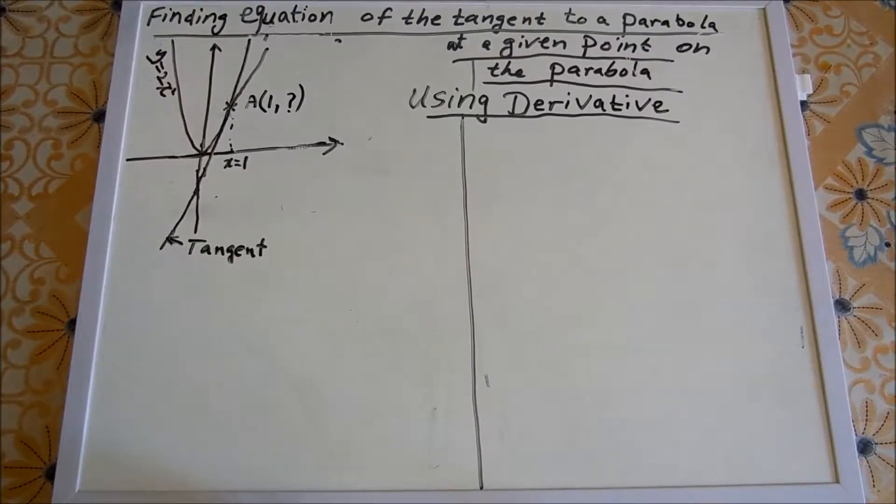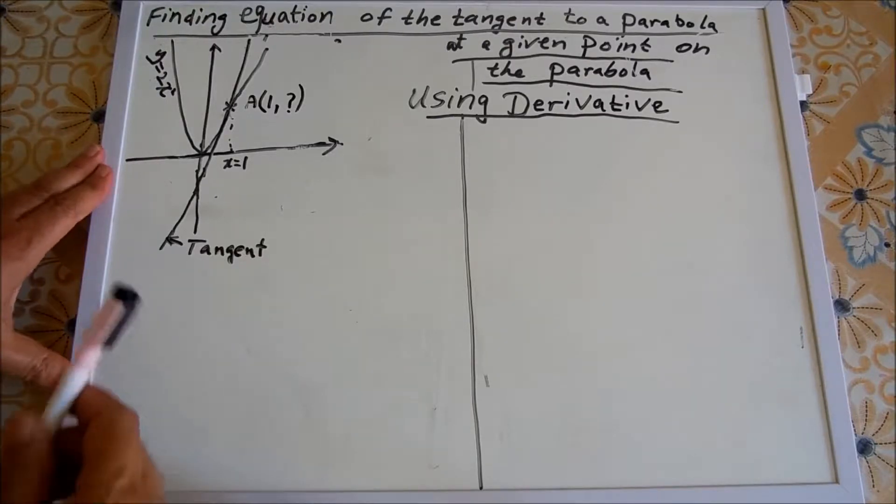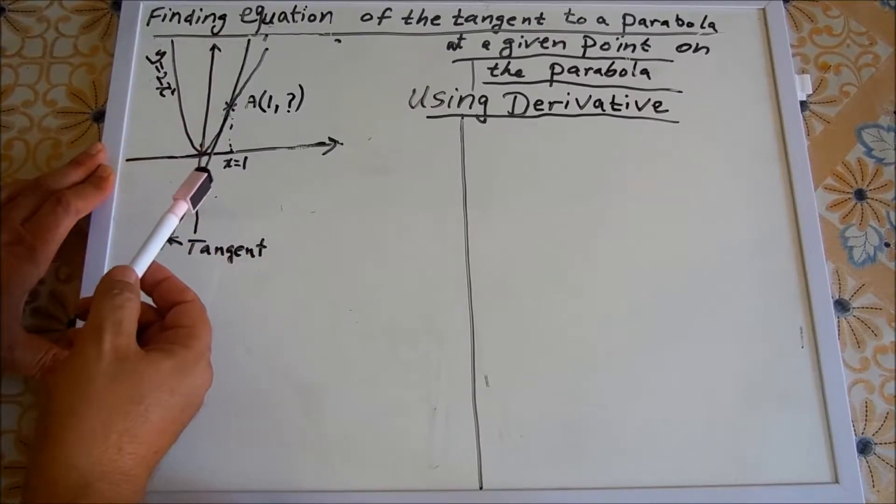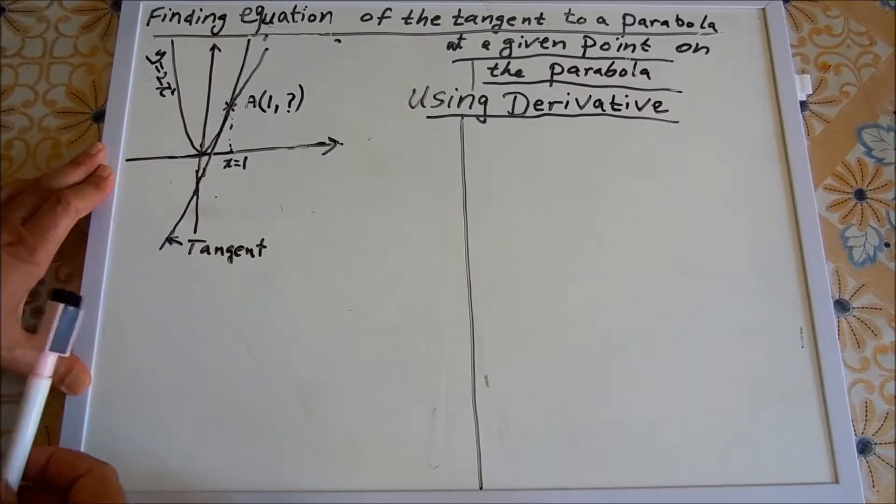Hi guys, welcome to Math and Physics for You. Now we want to find the equation of the tangent to a parabola at a given point on the parabola using the derivative. The first thing we start with: we are given the value of x at the point A where we want to find the gradient of the tangent.